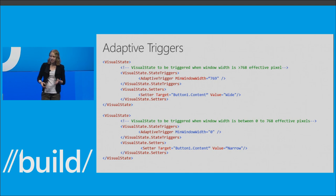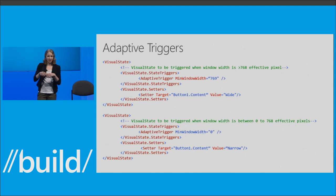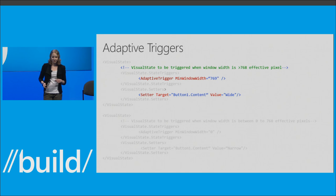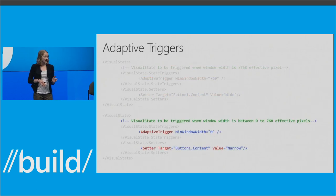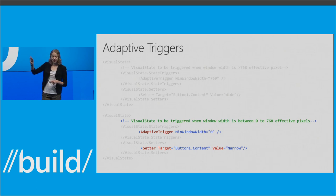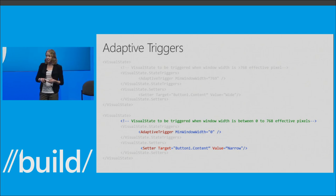Let's look at an example of using an adaptive trigger. A developer wants to show a wide button on big screens and exchange it for a narrow button on small screens. Using the adaptive trigger of minimum window width: if the screen is greater than 768 effective pixels, show a wide button; if less than 768 pixels, show a narrow button optimized for the phone. This adaptive trigger can be used in many ways — you could also use input type, device family, or some other custom trigger.